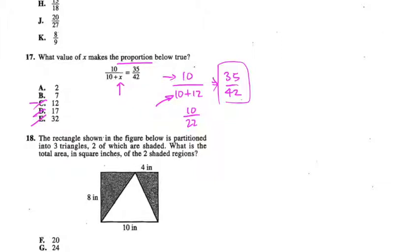I'm going to try 2. 10 over 10 plus 2 equals 35 over 42. This is 10 over 12. Now at this point, you can plug that into your calculator and get a decimal, then plug 35 over 42 into your calculator and see if they're the same. They will be. Or you can just reduce: 10 over 12 reduces to 5 over 6, and 35 over 42 divided by 7 is 5, divided by 7 is 6. So they both reduce to 5/6. This is your answer.